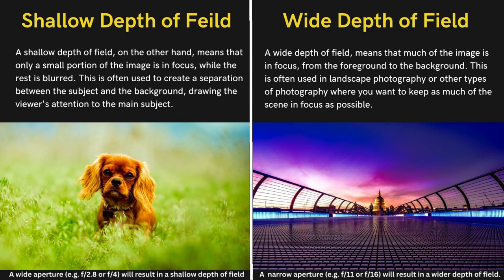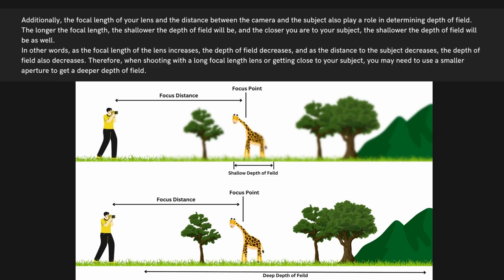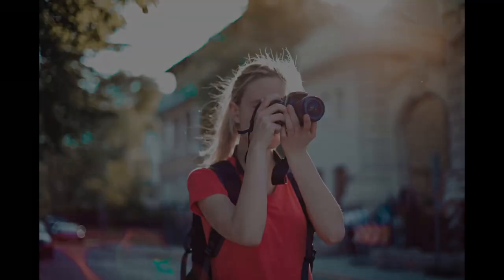You can control depth of field by adjusting the aperture setting on your camera. A wide aperture — e.g., f/2.8 or f/4 — will result in a shallow depth of field, while a narrow aperture — e.g., f/11 or f/16 — will result in a wider depth of field. The focal length of your lens and the distance between the camera and the subject also play a role. The longer the focal length, the shallower the depth of field will be, and the closer you are to your subject, the shallower the depth of field will be as well. When shooting with a long focal length lens or getting close to your subject, you may need to use a smaller aperture to get a deeper depth of field.